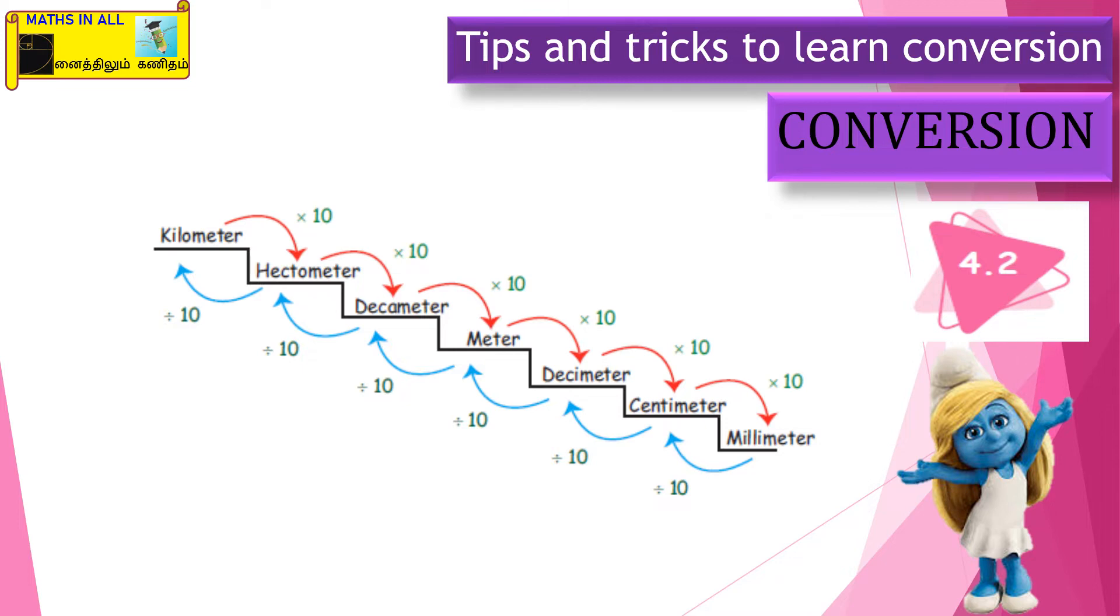Millimeter is the smallest unit and we have to multiply, clear. So starting point is millimeter, ending point is kilometer. So millimeter to kilometer, we multiply. Kilometer is the highest unit, we have to divide, clear.